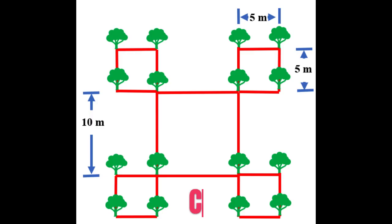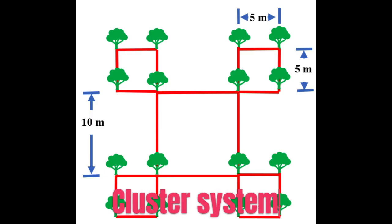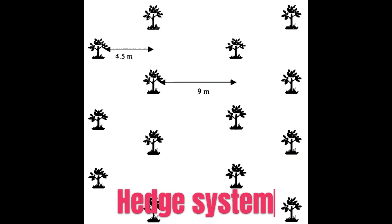In the cluster system, the area is divided into square clusters and crops are planted at all the corners of clusters. The distance between the clusters is double the distance between the plants within a cluster. The plant population in this system is twice the population of the square system.